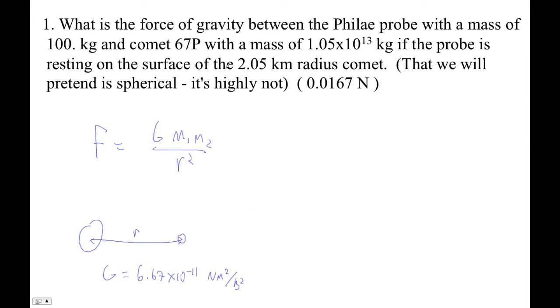So the first one is always just toss the numbers in the formula, see what you get for your force. So 6.67 e minus 11 newton meters squared per kilogram squared, and then we're times 100 kilogram, and then it's going to be a 1.05 e 13 kilogram comet.